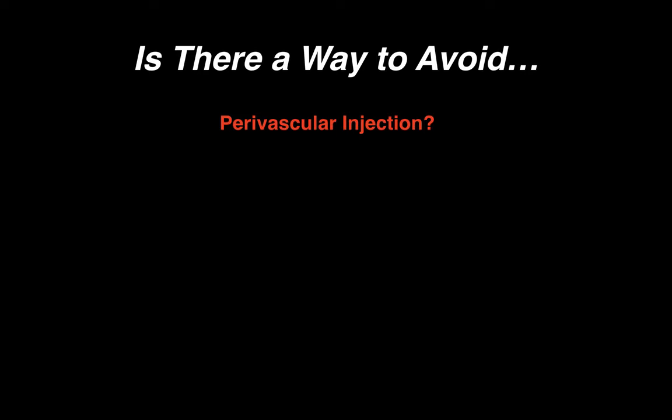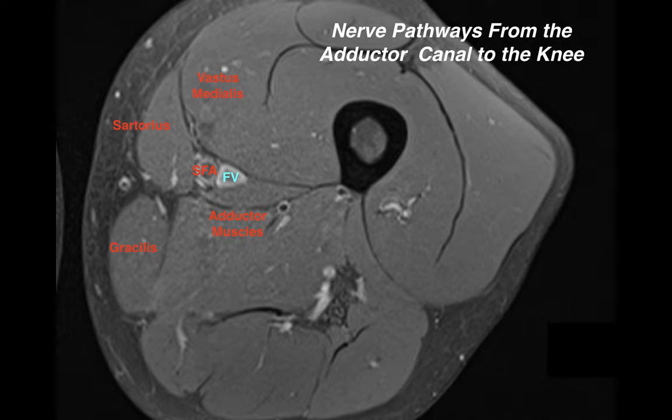These publications represent a sample of what motivated the search for two important improvements in the adductor canal block. Namely, is there a way to avoid perivascular injection and is there a way to avoid the need for a proximal injection site? This search led back to the anatomy lab and the library. Here we use an MRI of the thigh to demonstrate the findings of an extensive description of the innervation of the knee published in 1994 by Horner and Dellon.